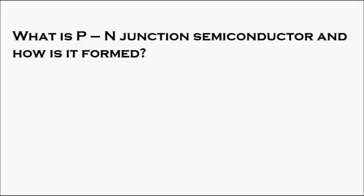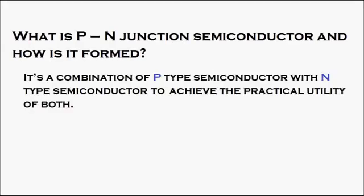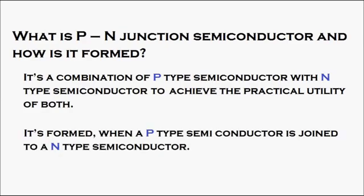What is a PN junction semiconductor and how is it formed? It is a combination of a P-type semiconductor with an N-type semiconductor to achieve the practical utility of both. It is formed when a P-type semiconductor is joined to an N-type semiconductor.